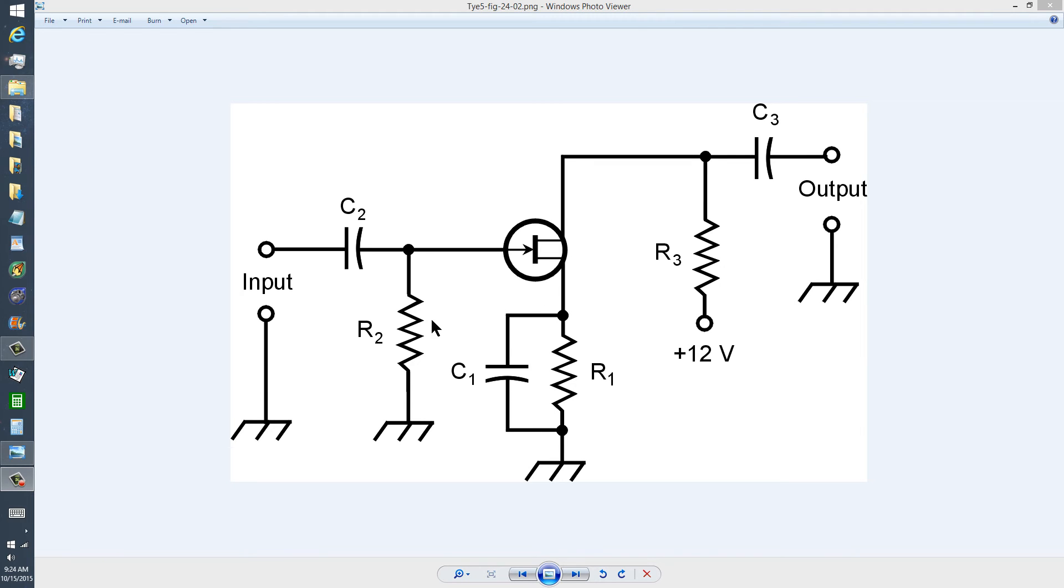Once you've designed the circuit, these component values are not given because you have to determine them by experimentation in order to find the optimum values. Each device requires different resistor values.